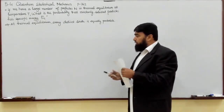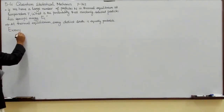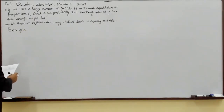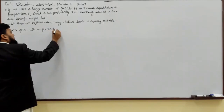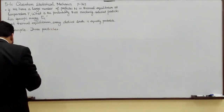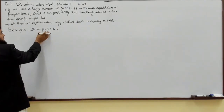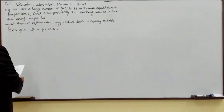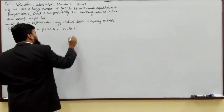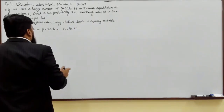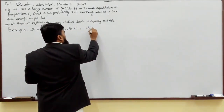We will proceed with a very comprehensive example of a three-particle system. We have three particles to distribute in different states, and we consider them to be non-interacting particles — the interaction between particles is ignored. These particles occupy three states: A, B, and C.